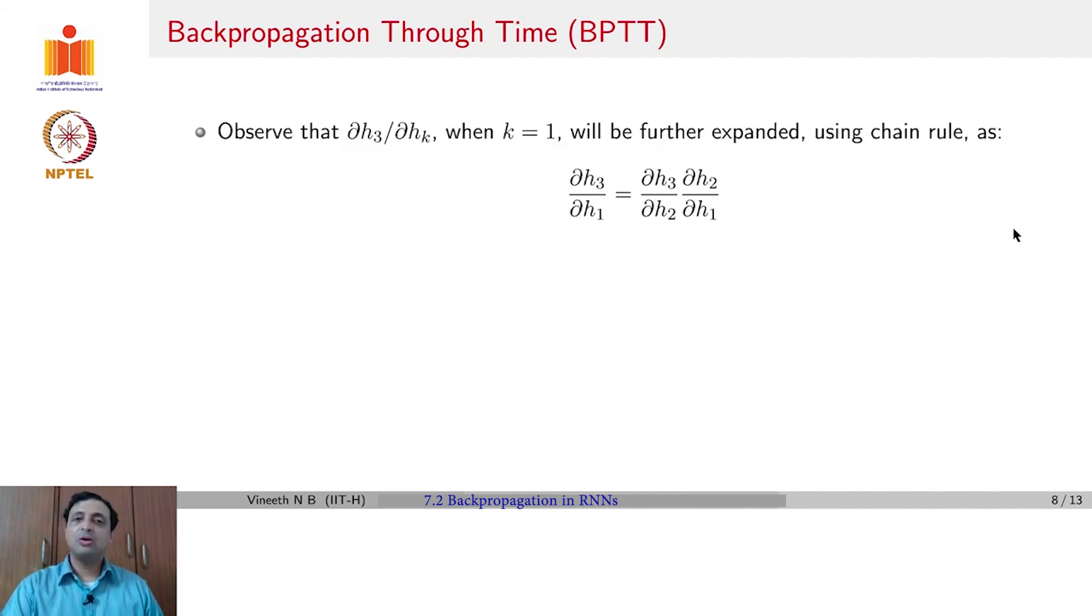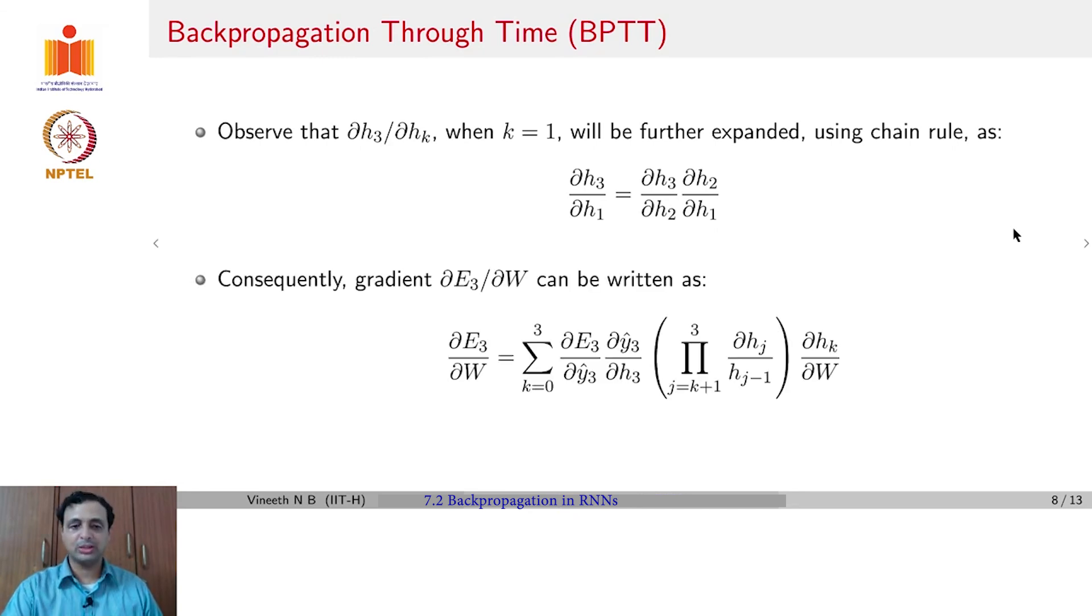If you now observe ∂H_3/∂H_k, when k equals 1, as we just said, can be expanded as ∂H_3/∂H_1 would be ∂H_3/∂H_2 times ∂H_2/∂H_1. This entire gradient can now be succinctly written as summation k going from 0 to 3, ∂E_3/∂Y_3 hat times ∂Y_3 hat/∂H_3, and all these terms in between can be subsumed into a product which is given by ∂H_j/∂H_{j-1}. And you still would have the summation that goes from k going from 0 to 3.